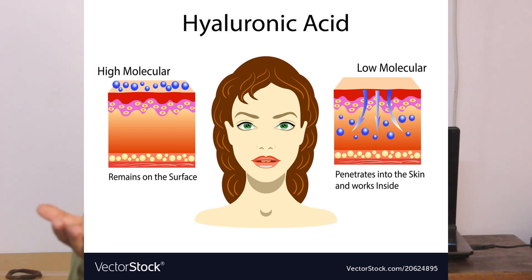You have to understand that hyaluronic acid is a humectant — it absorbs water from the atmosphere and keeps it locked, which gives a plumping effect. This is true if you are in a humid environment. But if you are in a dry environment, hyaluronic acid will absorb moisture from the body and bring it to the surface. You have to keep yourself hydrated, and the way you use hyaluronic acid is important.